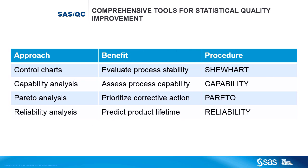SAS QC provides a comprehensive set of procedures for statistical quality improvement. This table shows the basics, but there are 14 SAS QC procedures in all. Although statistical quality improvement techniques originated in manufacturing, they are equally applicable in finance, healthcare, and other areas. Graphs and charts are essential for managers, engineers, and other staff. The SAS QC procedures produce a rich variety of graphical displays.